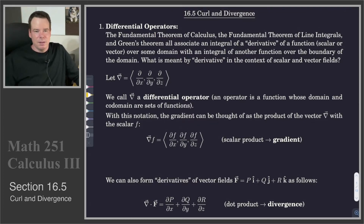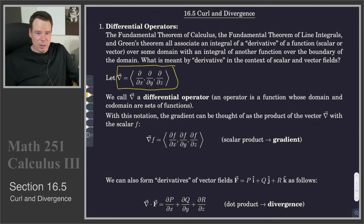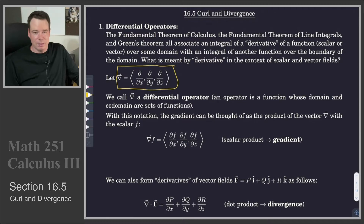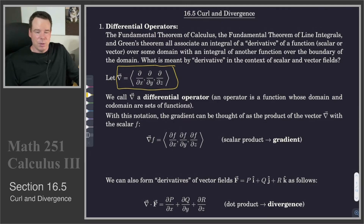I want to extend in this section this idea of derivatives to scalar functions and vector fields. To start, we're going to introduce a formal operator. This del symbol (∇) represents a vector of differential operators: partial derivative with respect to x as the first component, partial derivative with respect to y as the second component, and partial derivative with respect to z as the third component. We call these operators because an operator takes a function in and returns a function out — so we call this a differential operator.